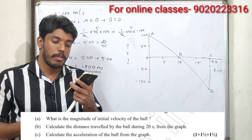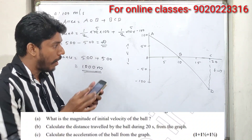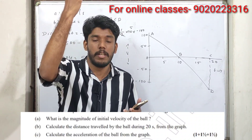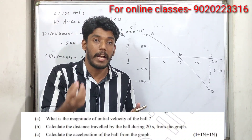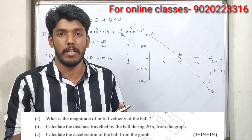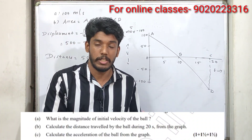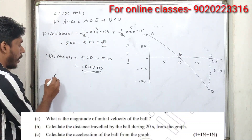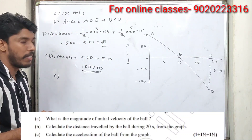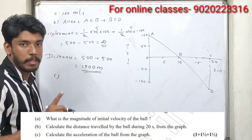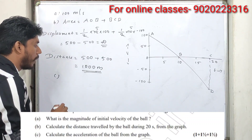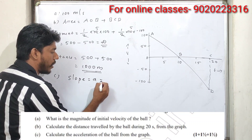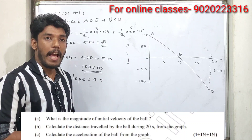The slope of the graph gives the acceleration of the ball from the graph. This can be used for vertical motion in space. Acceleration is minus g, approximately minus 9.8 — I'll use 10. Using a velocity-time graph, you can find the acceleration from the slope. If you use a slope, you can use x and the angle, using tan theta.